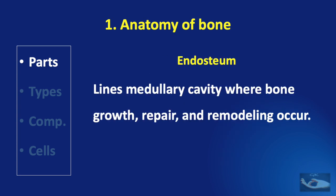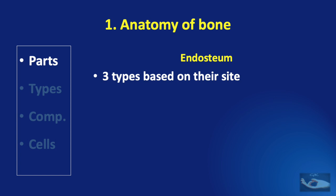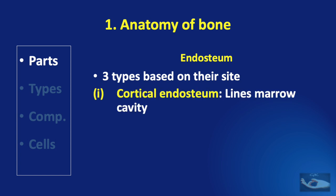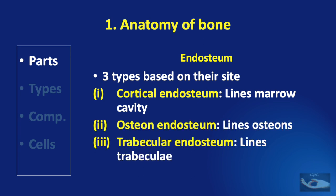Endosteum lines the medullary cavity where bone growth, repair, and remodeling occur. It is thinner than the periosteum and consists mainly of flattened osteoprogenitor cells and type III collagenous fibers. There are three types of endosteum based on their location: the cortical endosteum lines the marrow cavity, osteon endosteum lines the osteons, and the trabecular endosteum lines the trabeculae.